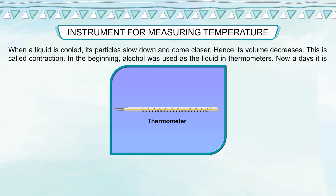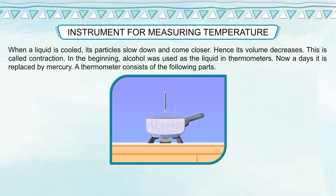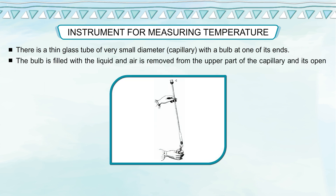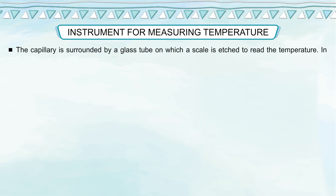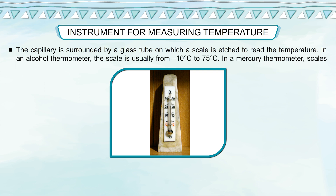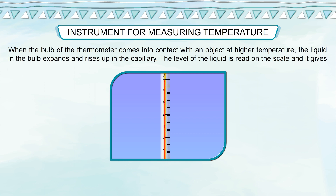In the beginning, alcohol was used as the liquid in thermometers. A thermometer consists of a thin glass tube of very small diameter (capillary) with a bulb at one of its ends. The bulb is filled with the liquid, air is removed from the upper part of the capillary, and its open end is sealed. The capillary is surrounded by a glass tube on which a scale is etched to read the temperature. In an alcohol thermometer, the scale is usually from −10°C to 75°C; in a mercury thermometer, scales can vary up to much higher temperatures. When the bulb comes into contact with an object at higher temperature, the liquid expands and rises up in the capillary, giving the temperature reading.